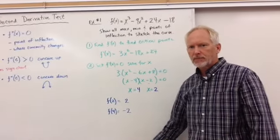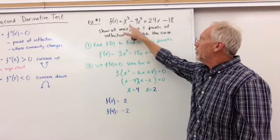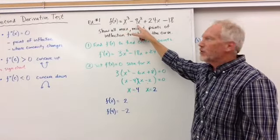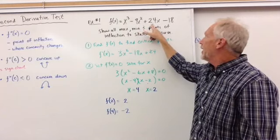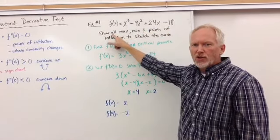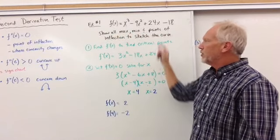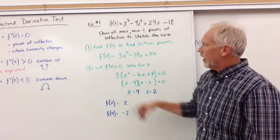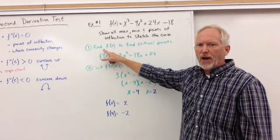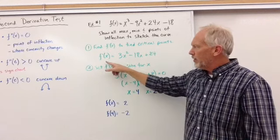So we have f of x is equal to x cubed minus 9x squared plus 24x minus 18. The question says show all maximum, minimum, and points of inflection to sketch the curve. All right, so first we want to find f prime of x to find the critical values.